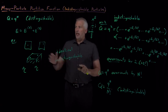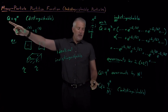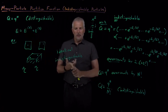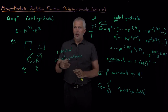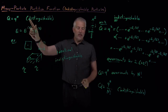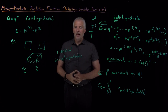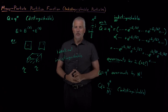Now we know how to calculate the full system partition function for independent subsystems or for identical particles that are either distinguishable or indistinguishable. The next step is to figure out how to actually use these partition functions to calculate some properties of the system that we're interested in.